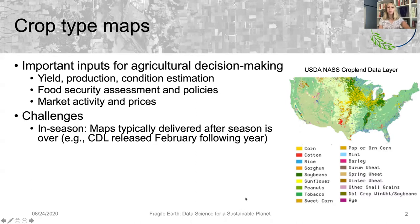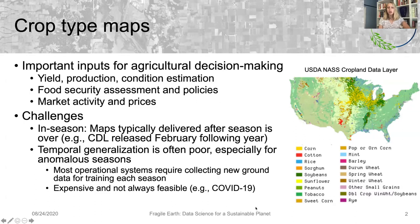One challenge for producing crop type maps is that for many applications it's important to have them during the growing season, and many maps such as the CDL are produced after the season is over. Another challenge is that most models do not generalize well to future seasons that are not captured in the training data, especially when there are anomalies like planting delays.